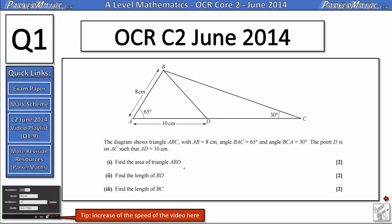In part 1 we need to find the area of triangle ABD. In part 2 we need to find the length of BD and in part 3 we need to find the length of BC.